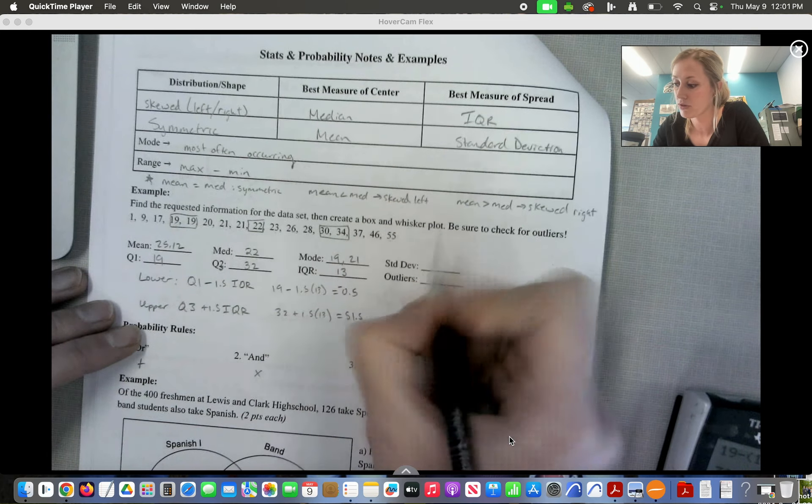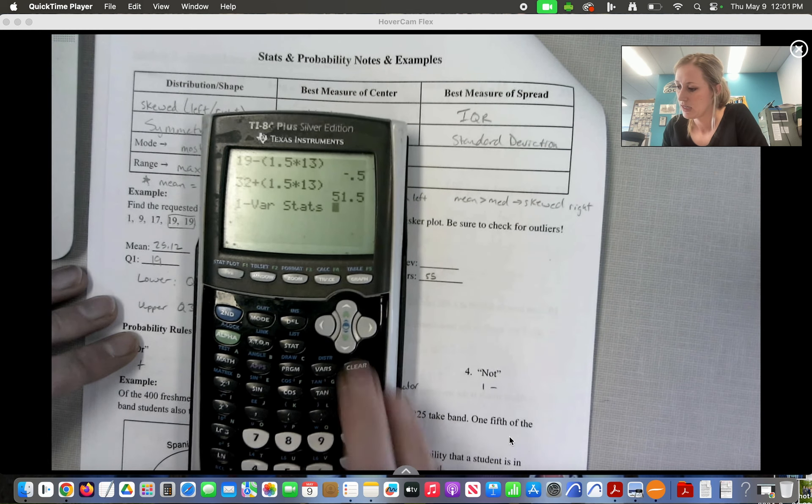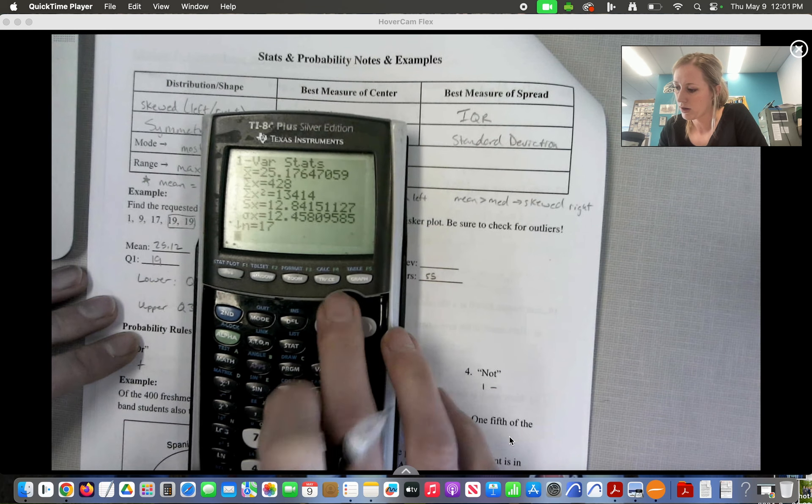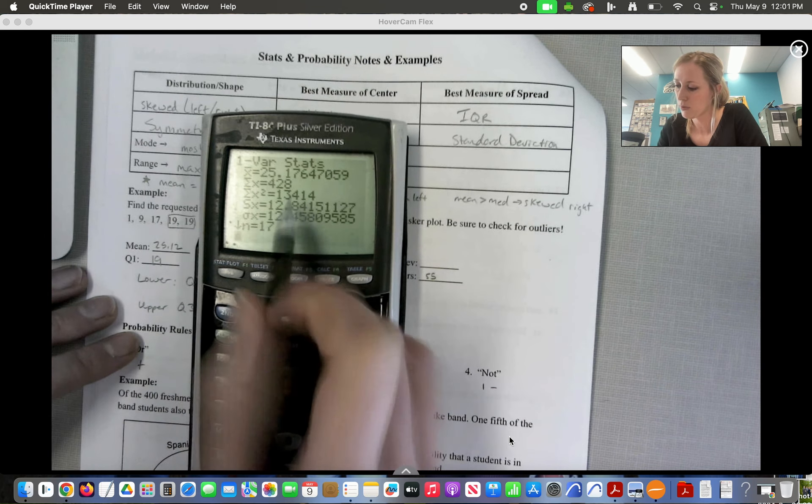Standard deviation, I've already entered my list in here. So I'm going to go to calc, one variable stats, and then I'm going to look for standard deviation, which is the SX, so 12.8, and that tells me about the spread.